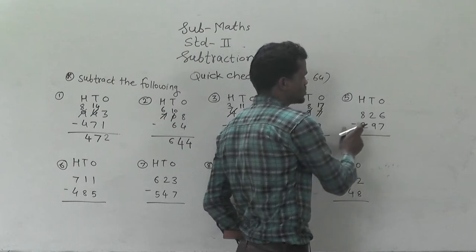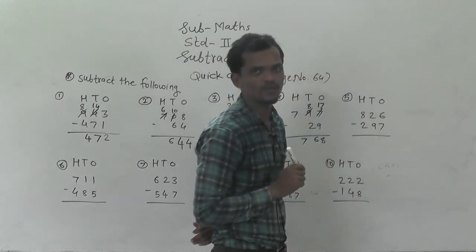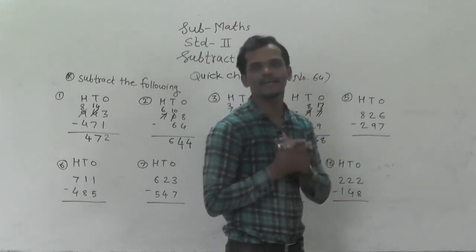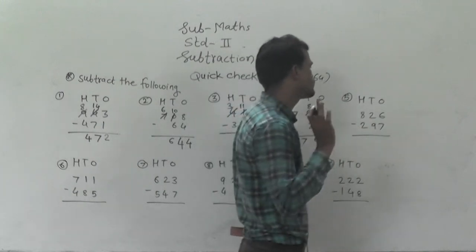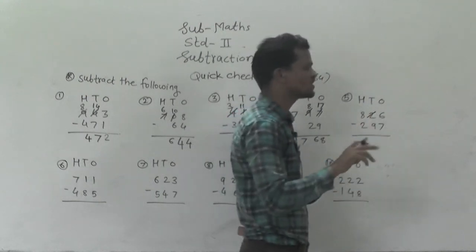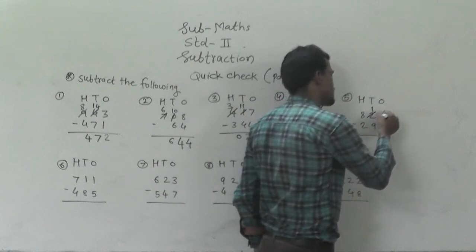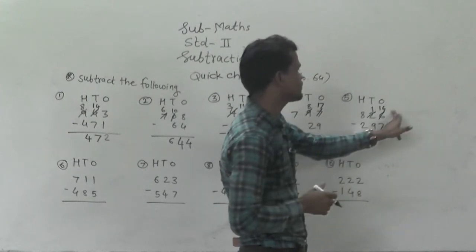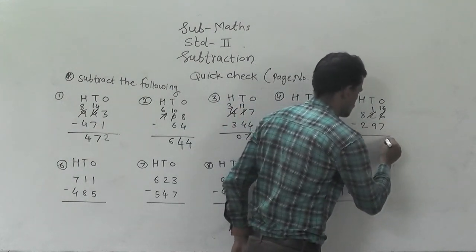Next example: 826 minus 297. Always start from the ones place. 6 minus 7 — is it possible? No, because 6 is smaller than 7 and we can't subtract a big number from a small number. So you have to regroup the tens digit. There are 2 tens, so regroup this 2 tens into 1 ten and 10 ones, and that 10 ones add into this 6 ones, so you will get 16 ones. Now 16 minus 7 is 9.